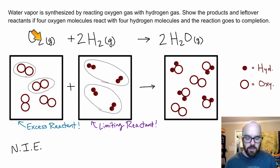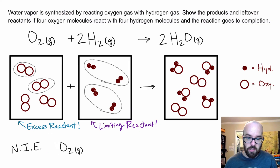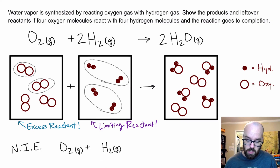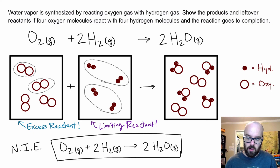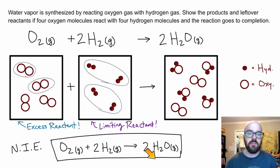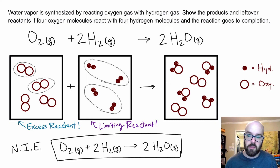For the net ionic equation, notice that oxygen doesn't split into ions — it's a covalent O₂ molecule — and hydrogen exists as H₂, not H⁺ ions. So we represent them as O₂ and H₂. Our net ionic equation is O₂(g) + 2 H₂(g) → 2 H₂O(g) — the same as our molecular equation, because we had no spectator ions in this reaction. Hopefully this was helpful in understanding particulate diagrams and net ionic equations.